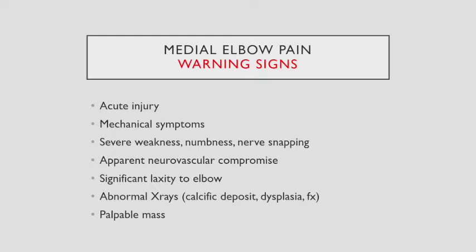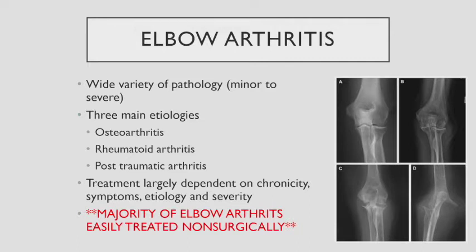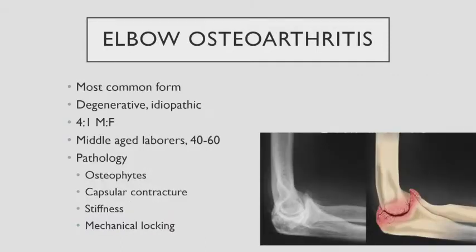Warning signs for golfer's elbow referral: acute injury, mechanical symptoms, severe weakness, numbness, nerve snapping, neurovascular problems, laxity, or a palpable mass. Elbow arthritis comes in many shapes and forms with three main etiologies: osteoarthritis, rheumatoid arthritis, and post-traumatic arthritis. Treatment depends on how chronic it is, how much it bothers them, and the etiology. The vast majority of elbow arthritis is treated non-surgically. Since we don't walk on our elbows, we can often treat most of this without surgery. Osteoarthritis is the most common form — degenerative, idiopathic, mostly in males, mostly middle-aged laborers.